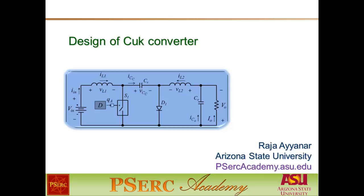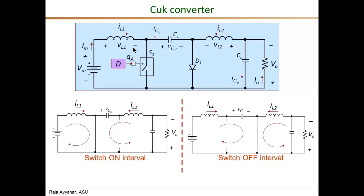This short video is on the design and selection of the various components used in a Ćuk converter. Since we have gone through detailed design procedures for all the basic non-isolated DC-DC converters, we can cover this quickly. Here is the schematic of the Ćuk converter, and the design involves selecting the values and parameters for the two inductors, the output capacitor, the coupling capacitor, as well as the current and voltage ratings of the switch and diode. In the Ćuk converter analysis video we looked at the details of the equivalent circuits, which will come in handy in the design procedure.